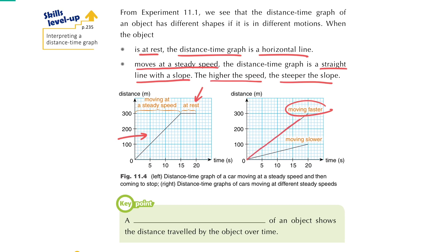In the second graph, the first line represents an object moving faster compared with the other line, where the object is moving slower. So to summarize, the displacement-time graph shows the distance traveled by the object over time, and we should look at the slope of the graph in order to interpret the motion of the object over a particular time period.